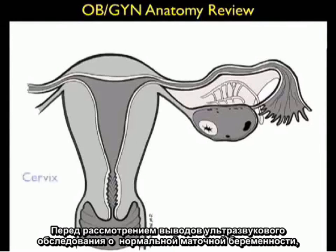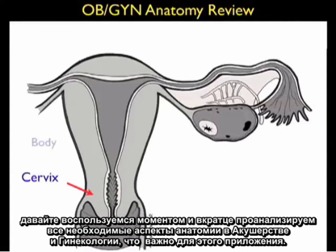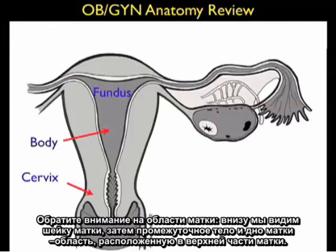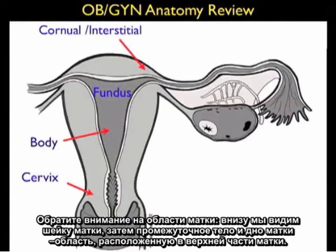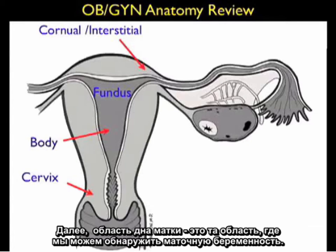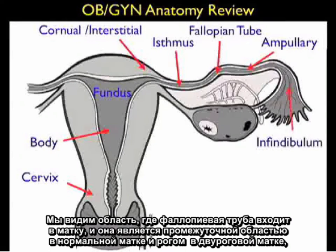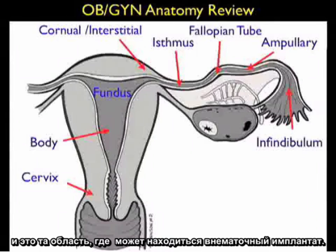Before launching into the sonographic findings of a normal intrauterine pregnancy, let's quickly review the OBGYN anatomy important for this application. We see the uterus to the left and adnexa to the right. Notice the areas of the uterus: the lower cervix, the intermediate body, and the fundal region towards the top. The fundal region is where we define an intrauterine pregnancy to be located. We also see the interstitial region where the fallopian tube enters the uterus in a normal uterus, and the corneal region in a bicornuate uterus — where some variants of ectopics can implant.